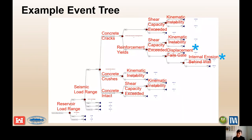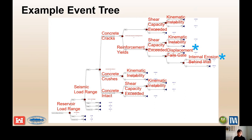The event tree for this failure mode is the same structure used for reinforced concrete failure mechanisms and pier failure under seismic loading. Various reservoir and seismic load ranges need to be considered. The event tree nodes evaluate whether concrete cracks, whether reinforcement yields, whether the shear capacity of the section is exceeded, and whether the moment capacity is exceeded. In each case, you also need to evaluate how much displacement the wall undergoes and whether that displacement initiates the third failure mechanism — the open seepage path adjacent to the embankment.